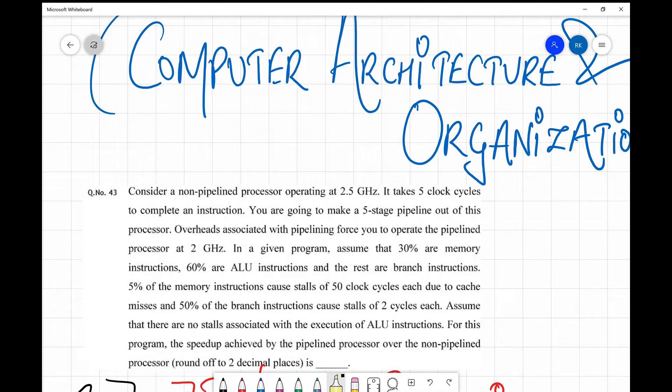Here is the question. It gives you a scenario of non-pipelined version and a pipelined version and finally they ask you about the speedup. I'm going to read the question and side by side jot down the given things for both scenarios, and then we're going to solve the configuration.